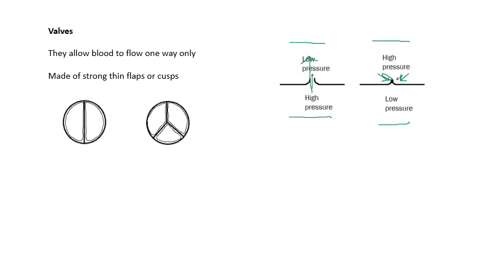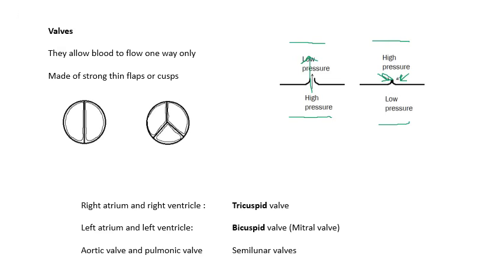We need to know the names of some valves. Between the right atrium and the right ventricle you've got the tricuspid valve — tricuspid because there are three cusps. Between the left atrium and the left ventricle you have the bicuspid valve, also called the mitral valve — bicuspid because there are two cusps. From the heart to the aorta, and to the pulmonary artery, you have semilunar valves. They are actually tricuspid as well but look very different. Apparently they look a bit like the moon.